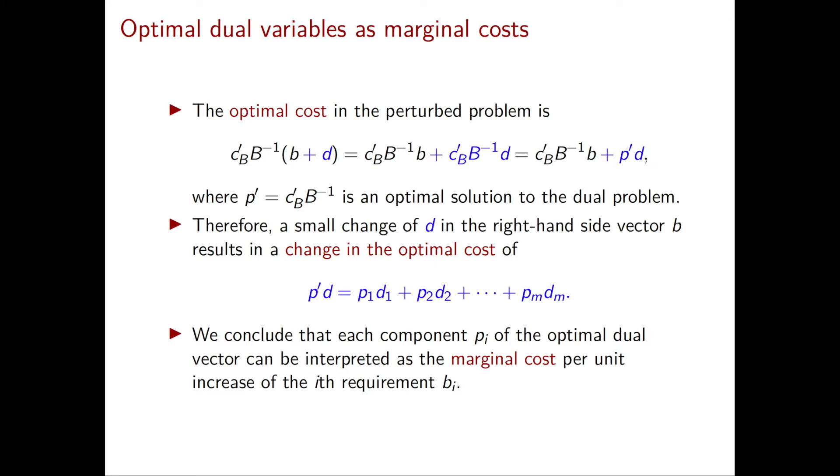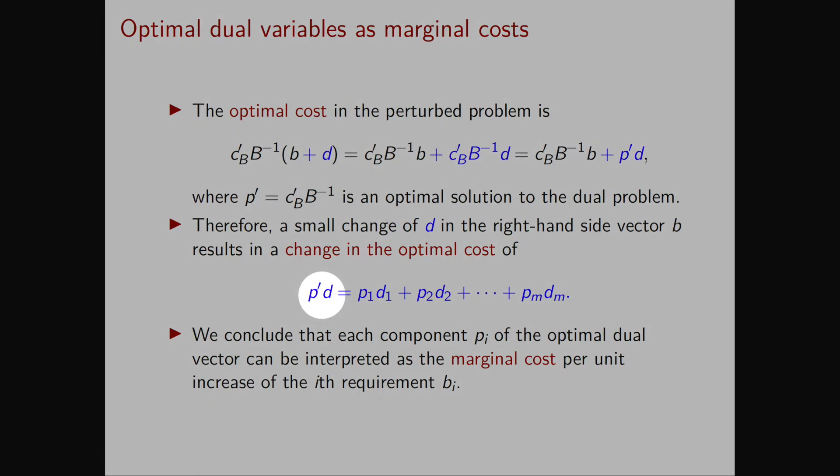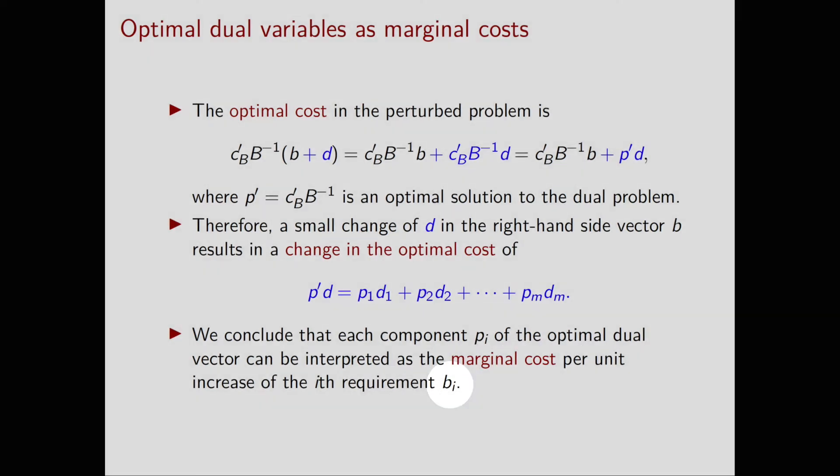In particular, if we set D to be equal to the vector of all ones, then Pi will be exactly the marginal cost per unit increase of the i-th requirement Bi.